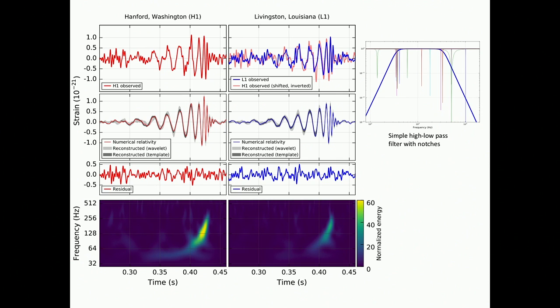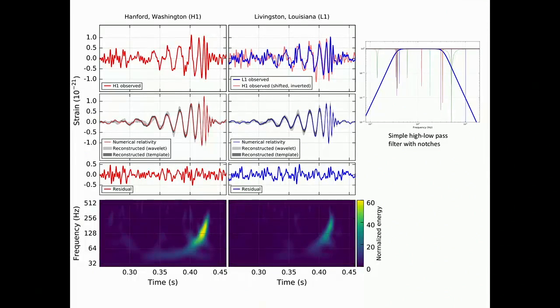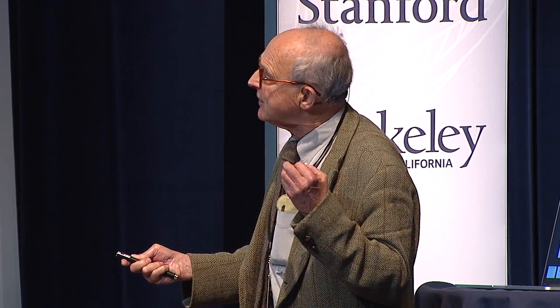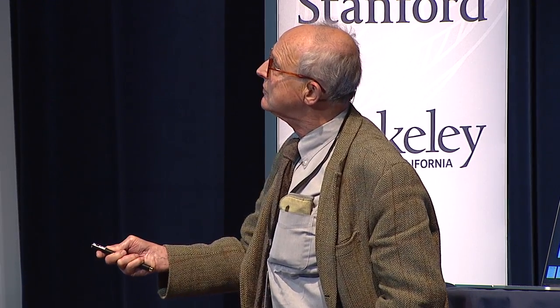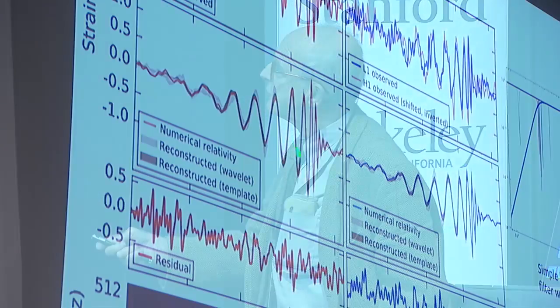These were filtered by a filter much like the tone controls on an audio set — low frequencies were killed off and high frequencies were killed off. But you could see this signal directly on a piece of paper; you didn't have to do a lot of processing. And here is the Einstein theory predicting what we think is the source — it turns out to be two black holes going around each other.